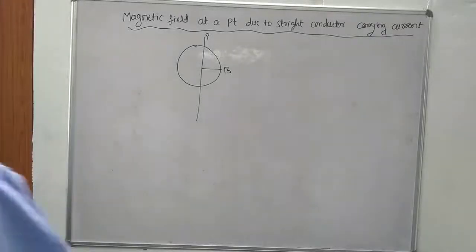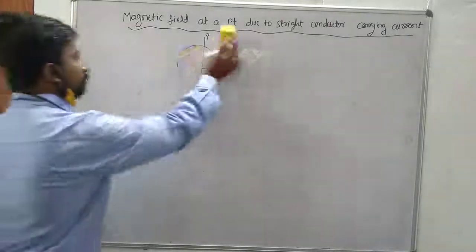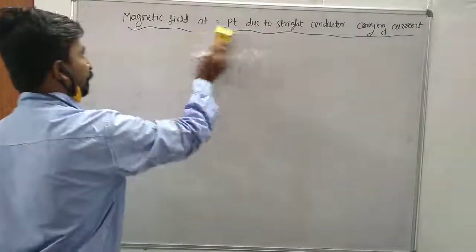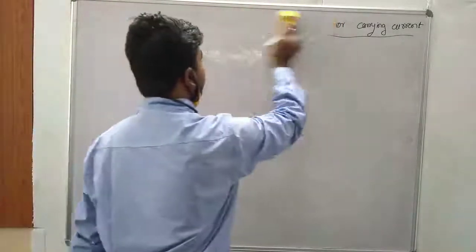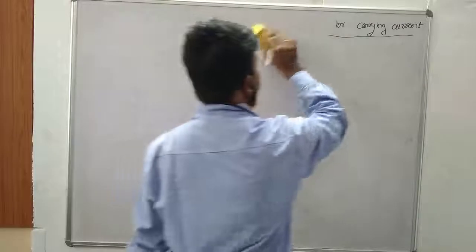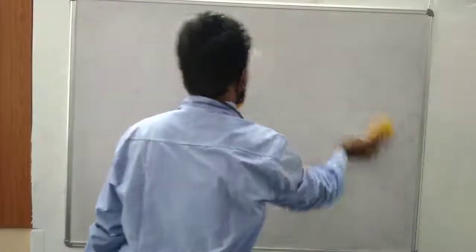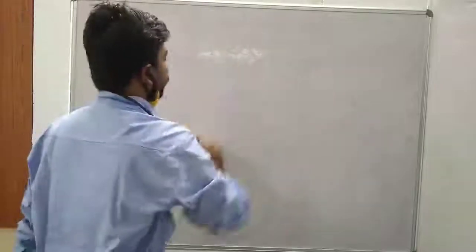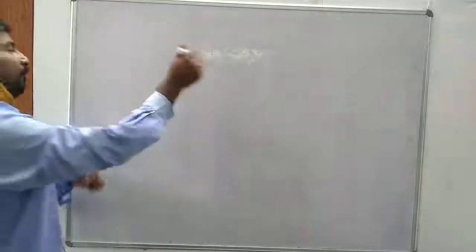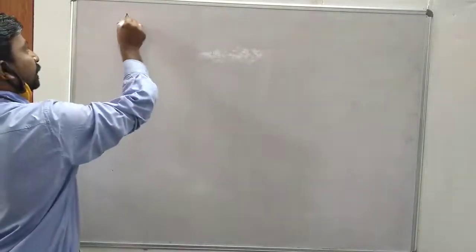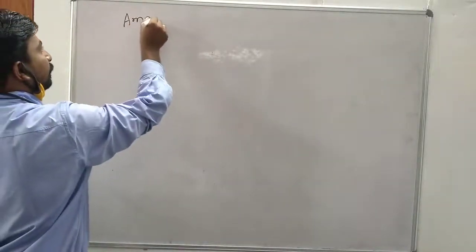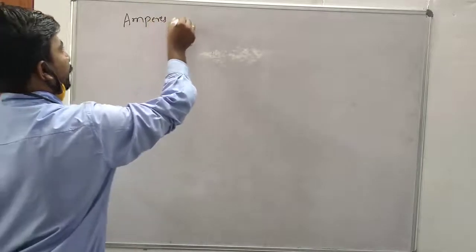Good morning students. Today we will discuss Ampere's Circuit Law, then the magnetic field at a point due to a straight conductor carrying a current and solenoid, then magnetic force and Lorentz force.